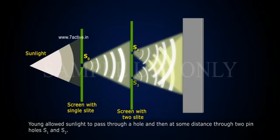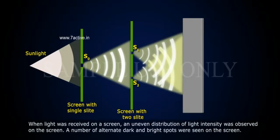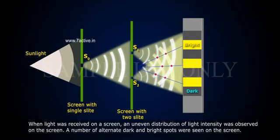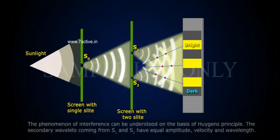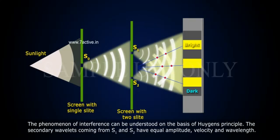S1 and S2. When light was received on a screen, an uneven distribution of light intensity was observed on the screen. A number of alternate dark and bright spots were seen on the screen.